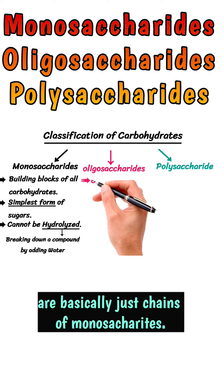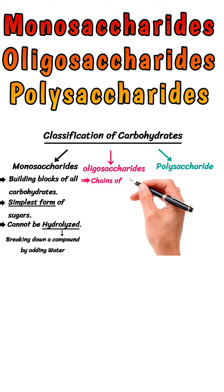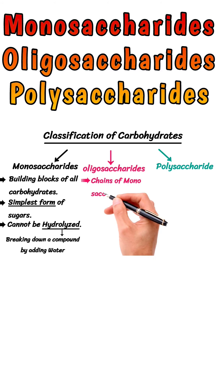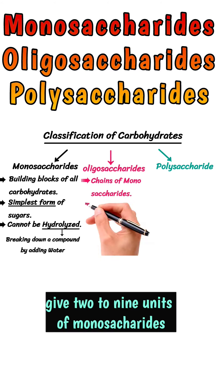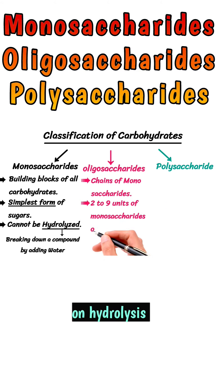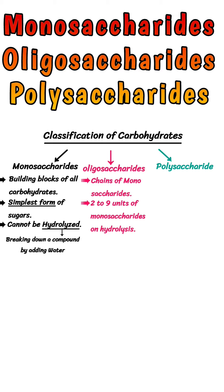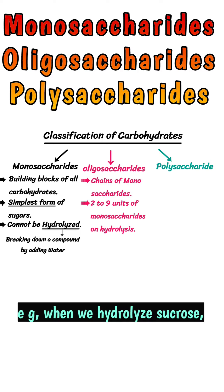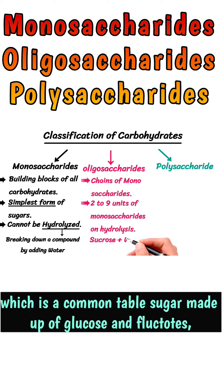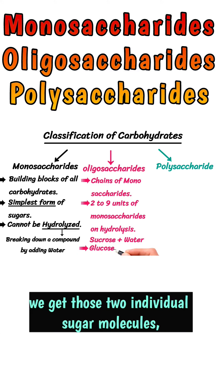Oligosaccharides are basically just chains of monosaccharides. They give 2 to 9 units of monosaccharides on hydrolysis. For example, when we hydrolyze sucrose, which is a common table sugar made up of glucose and fructose, we get those two individual sugar molecules.